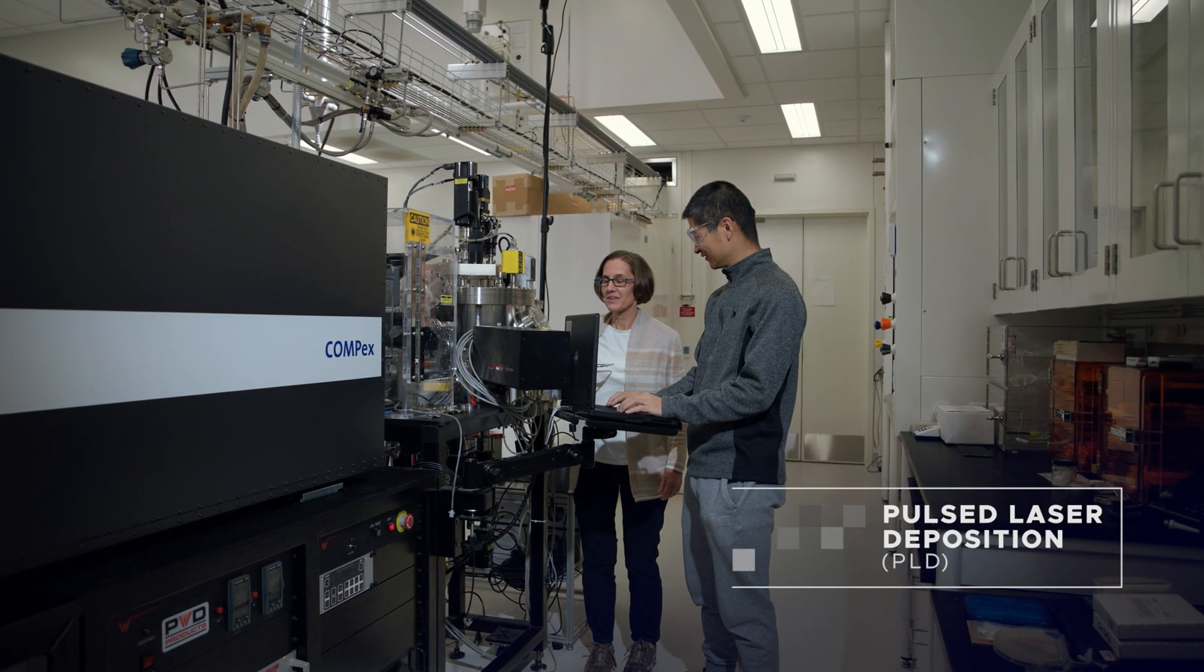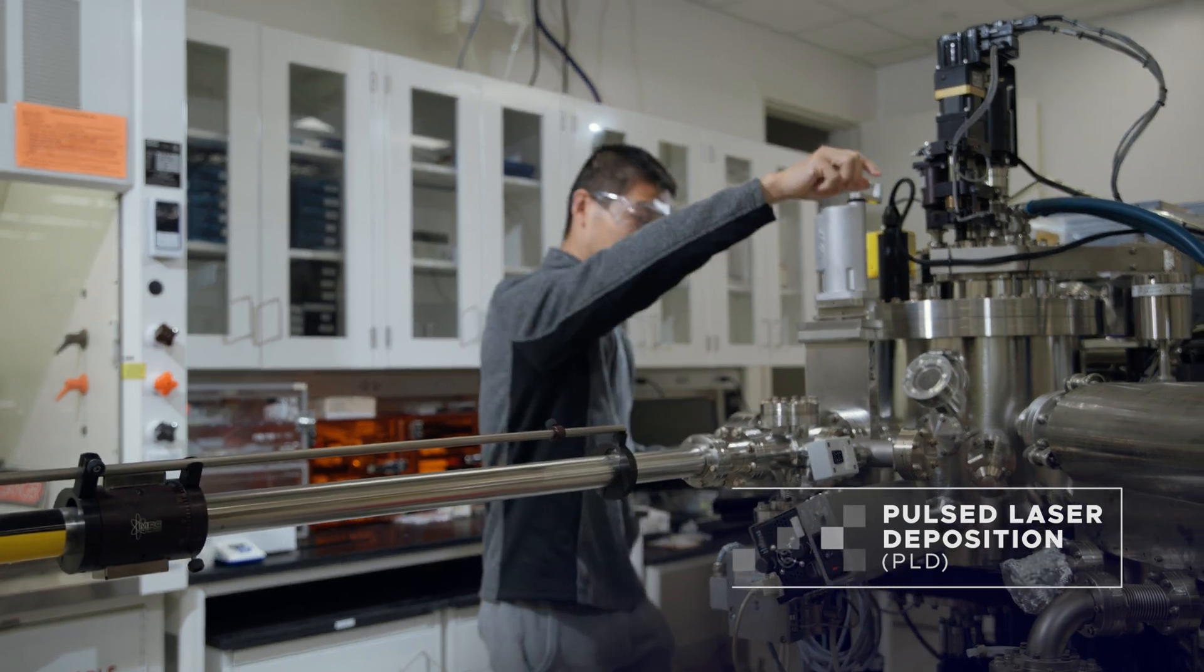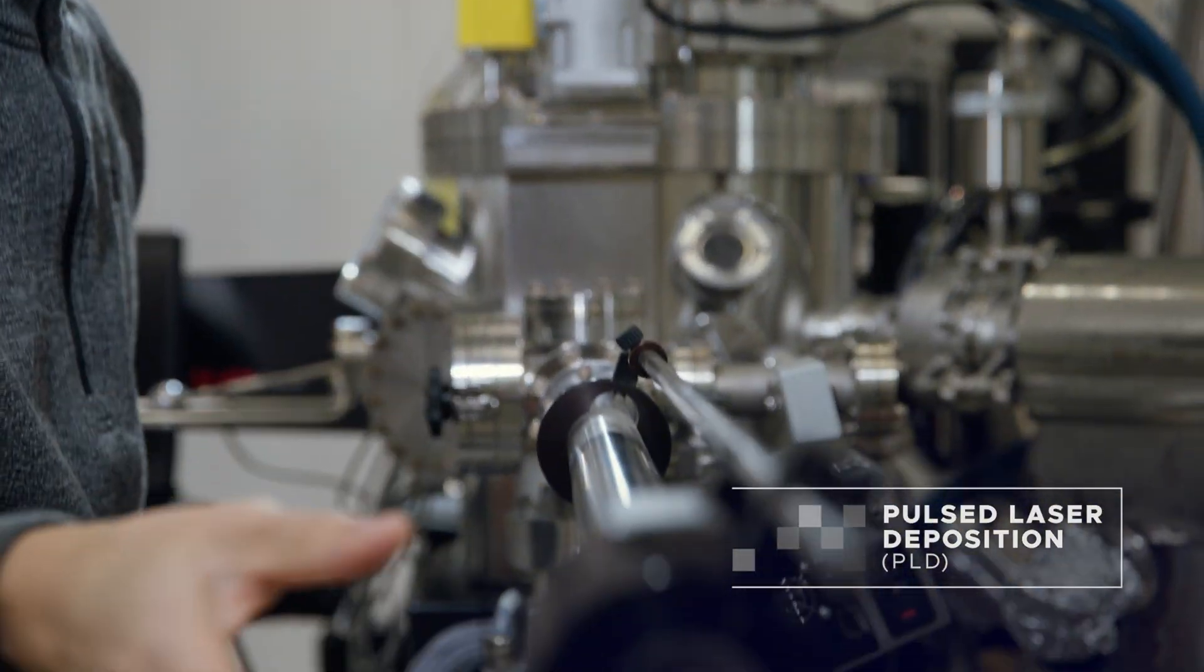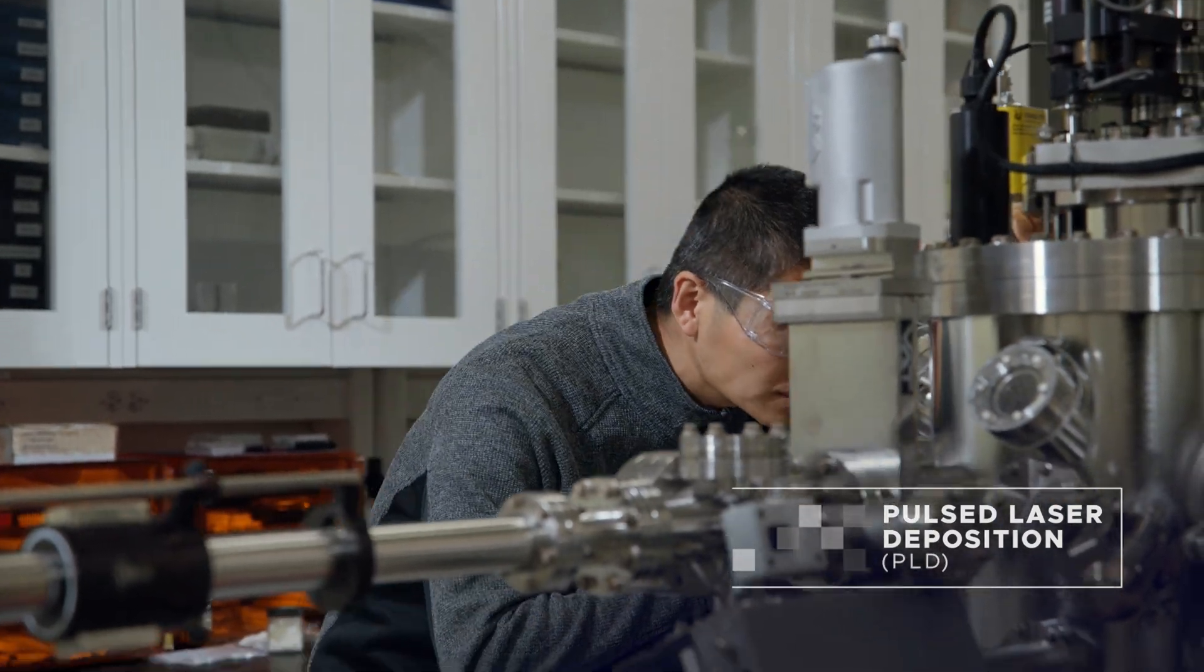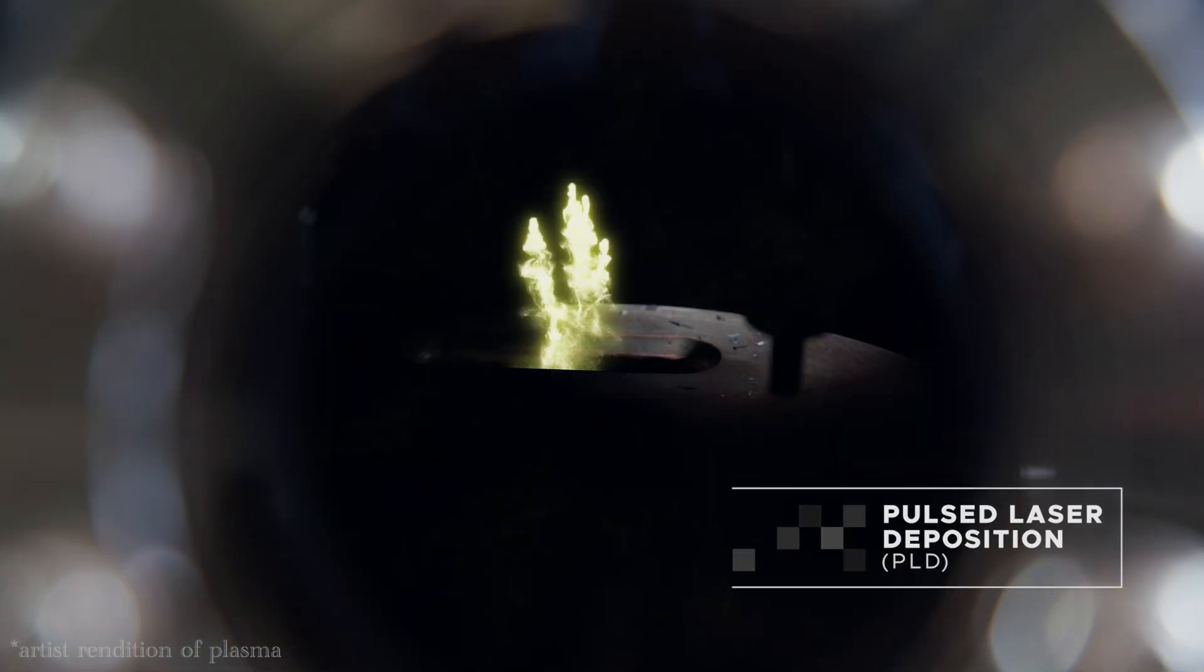In pulsed laser deposition, controlled laser blasts turn solid materials into plasma. These molecules then hit a crystalline template, creating a new film.